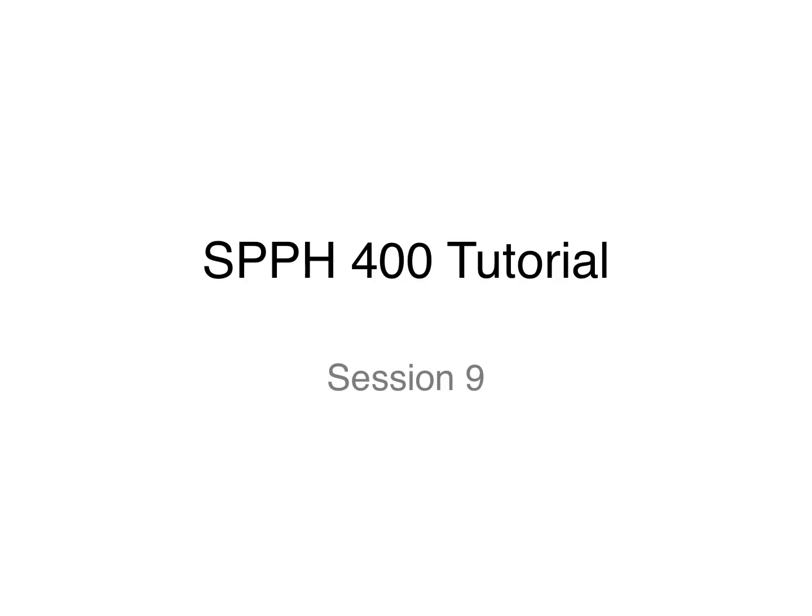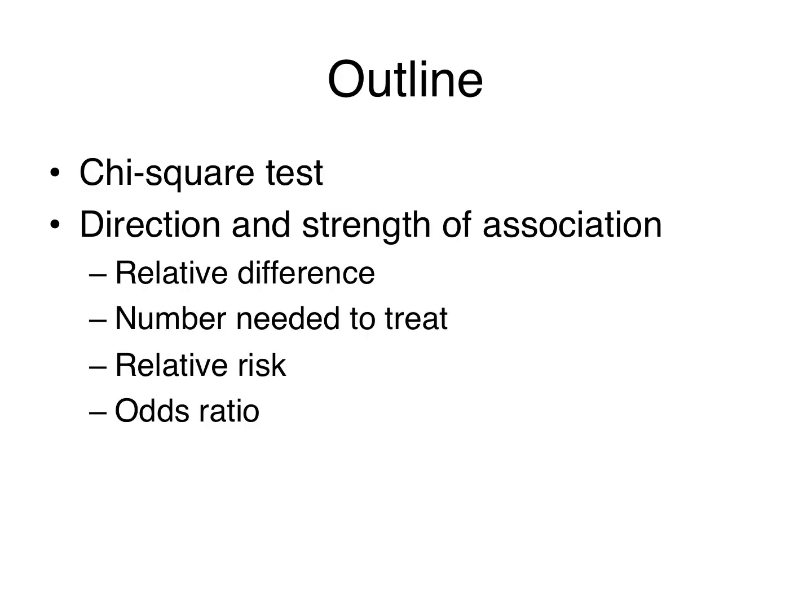Welcome to tutorial 9. In this tutorial we're going to introduce the chi-square test and talk about different ways that we can measure the direction and strength of the association between two categorical variables, including the relative difference, number needed to treat, relative risk, and the odds ratio.